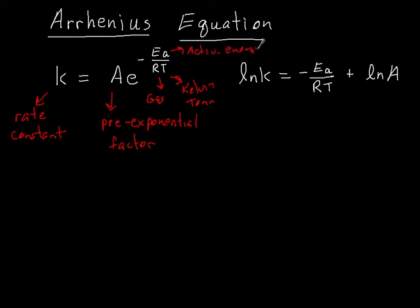You don't have to know this from the data booklet, but you need to kind of know what the parts are. So K is rate constant, A is pre-exponential factor or frequency factor, R is gas constant, T is Kelvin temperature, E sub A is the activation energy, and that E right here is the mathematical constant E.